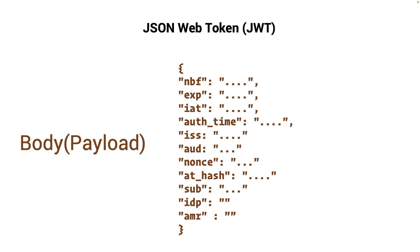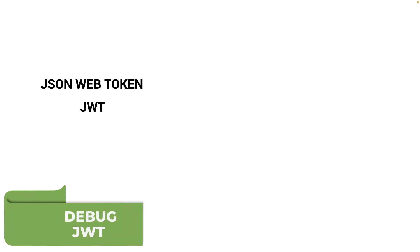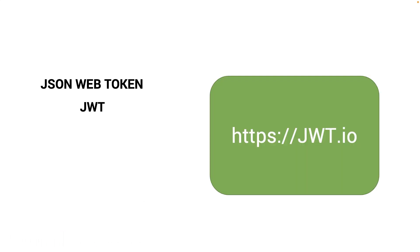Now you know what a JSON Web Token is. To debug a JWT, it's very simple: open jwt.io, paste your JWT, and you will see all the information related to that token. Now you know all the theory behind OpenID Connect, OAuth 2.0, all the flows, PKCE, and how it impacts your application. It's time to get to some coding in the next chapter.